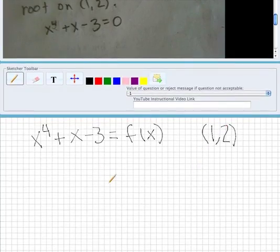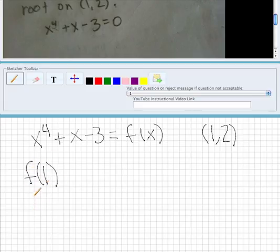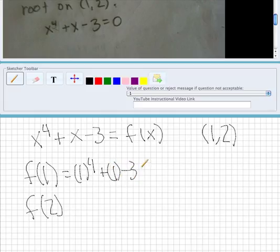So what we want to do is we want to plug in F of 1 and F of 2 into this equation. So what we get is 1 to the 4th plus 1 minus 3, which equals negative 1.